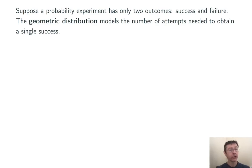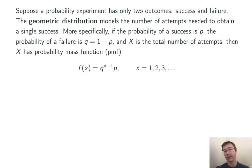The geometric distribution models the number of trials needed to obtain a single success. Suppose P is the probability of success, Q is the probability of failure, and X is the total number of attempts needed. Then X is a discrete random variable, and its probability mass function is Q to the X minus 1 times P, where X can be 1, 2, 3, and so on.